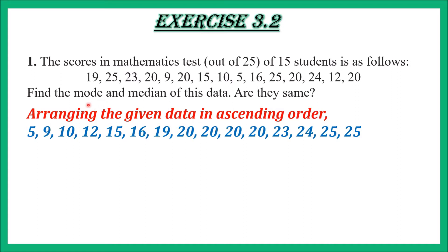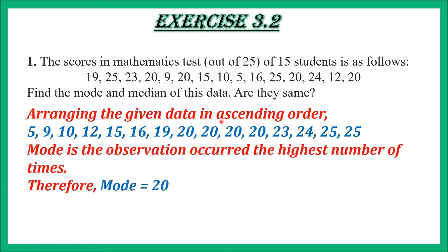As I told you, mode is the most frequent observation — the one that repeats the most is the mode. If you look at this data carefully, you will find that 20 has repeated 3 times, the most among all marks. So the mode of this data is 20. Mode is the observation occurred the highest number of times, therefore mode = 20.